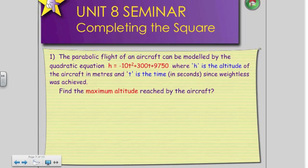The parabolic flight of an aircraft can be modeled by the quadratic equation, h is equal to negative 10t squared plus 300t plus 9750. On a side note, if you're going into engineering, you're going to get a lot of questions similar to this. Where h is the altitude of the aircraft in meters, and t is the time in seconds, since weightlessness was achieved.